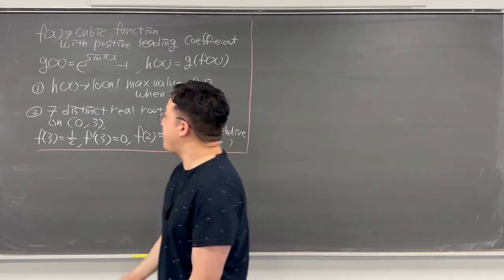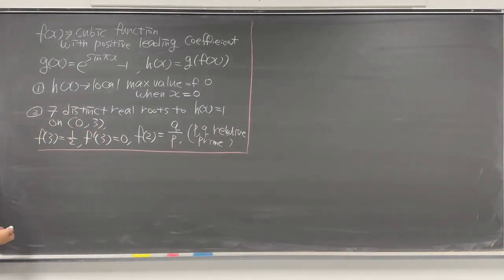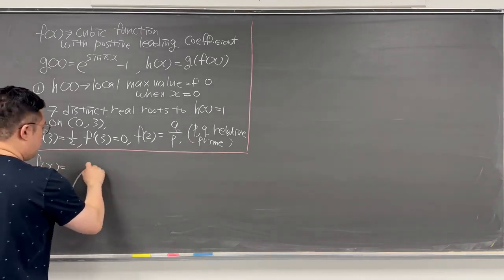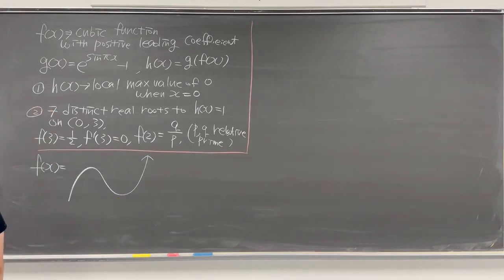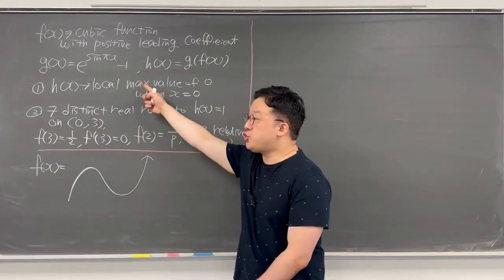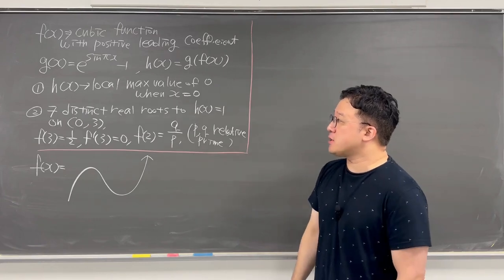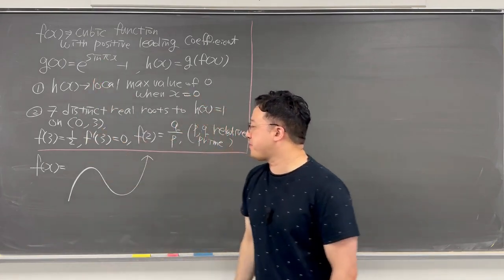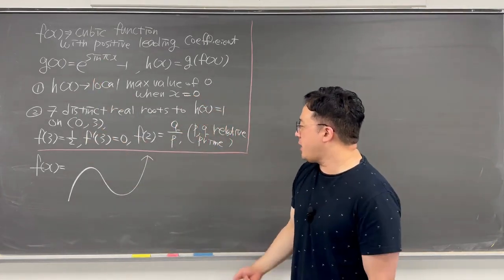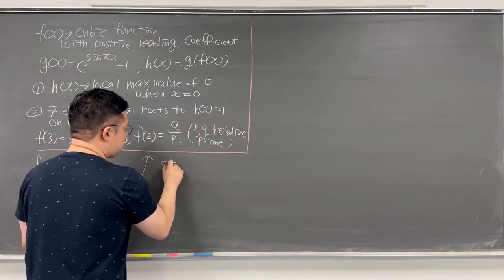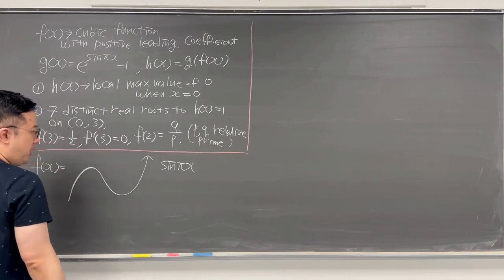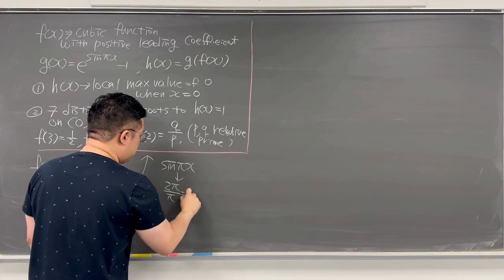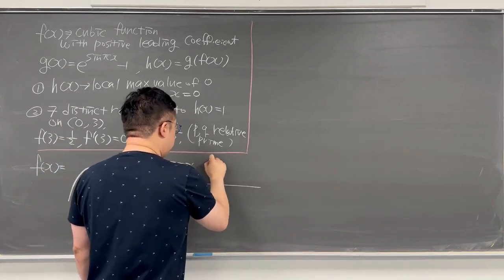First, let's think about f(x). It's a cubic function with a positive leading coefficient, so it should be looking just like this. Moving on to g(x), that is e to the power of sine πx minus 1. G(x) is itself a composite function. If we think about sine πx and how it looks on a graph, the period of sine πx is 2π over π, which equals 2. So the graph looks like this.